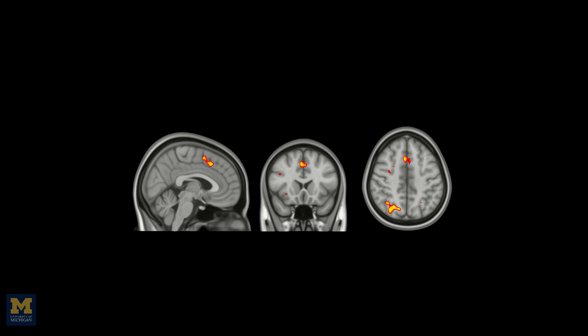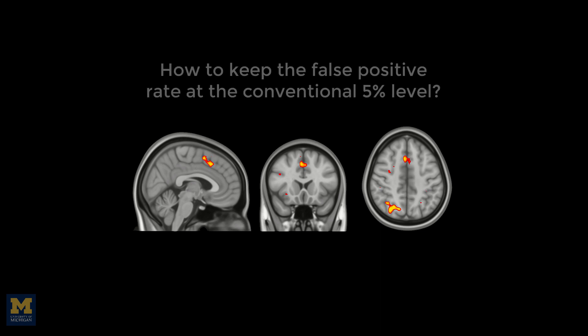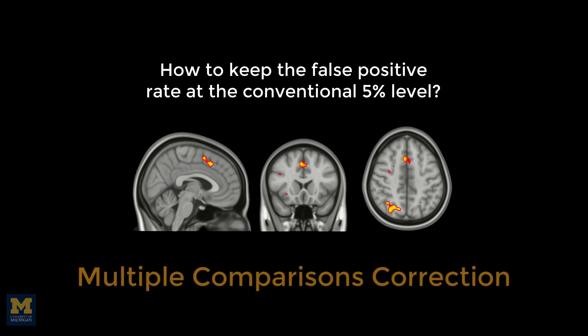To control for the number of false positives and to keep them at the conventional false positive rate of 5%, we need to do something called multiple comparisons correction.